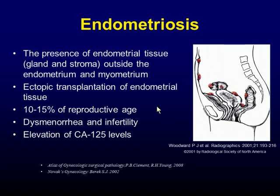Endometriosis is defined as the presence of endometrial tissue outside the uterus. Regarding the histogenesis, ectopic transplantation of endometrial tissue is most widely accepted. It is estimated to occur in 10-50% of women of reproductive age and is often associated with dysmenorrhea and infertility. Clinically, serum CA125 level is mostly elevated.